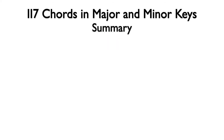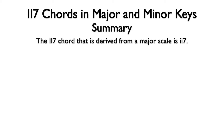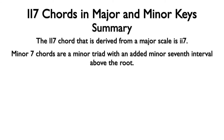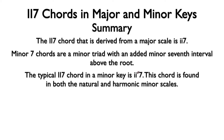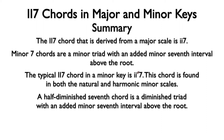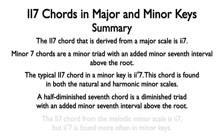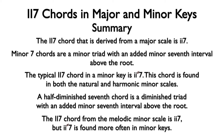Let's summarize. The two-seventh chord derived from a major scale is two minor seven. Minor seven chords are a minor triad with an added minor seventh interval above the root. The typical two-seventh chord in a minor key is two half-diminished seventh. This chord is found in both the natural and harmonic minor scales. A half-diminished seventh chord is a diminished triad with an added minor seventh interval above the root. The two-seventh chord from the melodic minor scale is two minor seven, but two half-diminished seventh is found more often in minor keys.